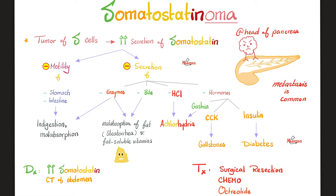Somatostatin also inhibits the secretion of hydrochloric acid in the stomach, resulting in achlorhydria. 'A' means no, 'chlor' is the Cl, 'hydra' is the hydrogen — no hydrochloric acid: achlorhydria. And when it inhibits gastrin release, it also causes achlorhydria.